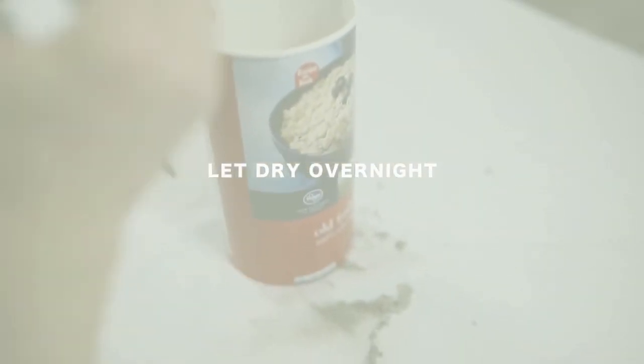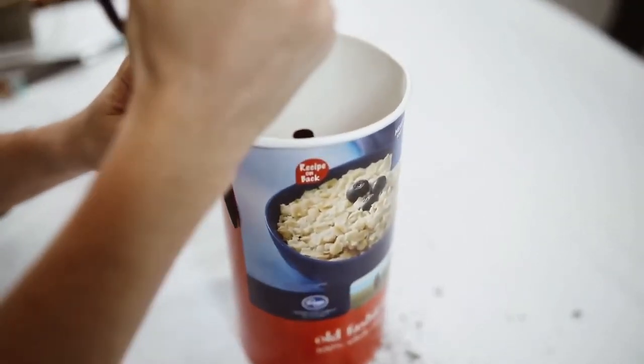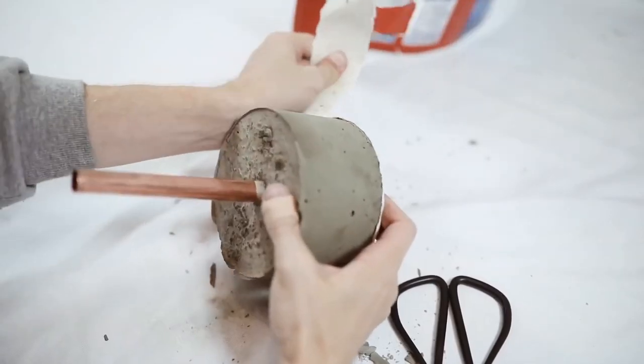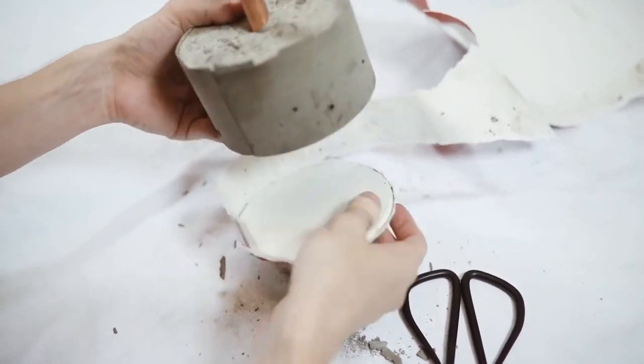I poured it in the bottom of an oatmeal container and then went ahead and placed one of my probably about eight inch tall copper pipes on the inside there. You're going to want to let that dry fully overnight so you have a nice base for your jewelry stand.